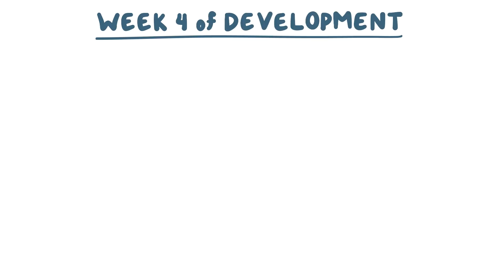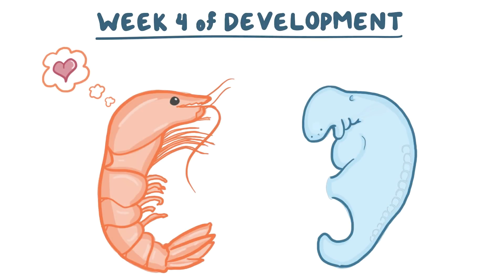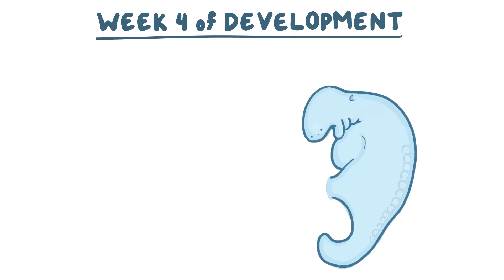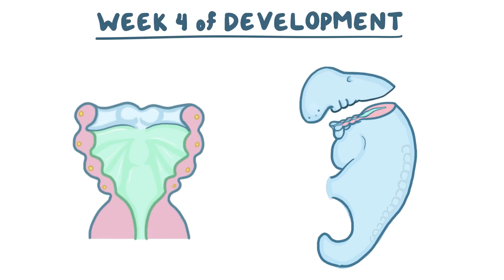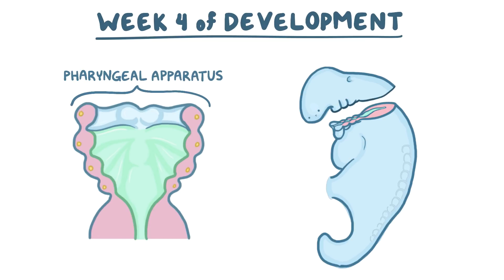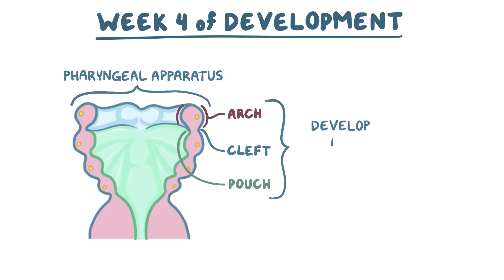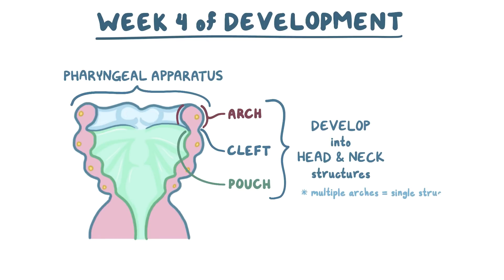By week 4 of development, the embryo takes on a more recognizably human form, but it still looks more like a shrimp than a baby. At the head end of this little shrimp-like creature, a set of structures called the pharyngeal apparatus starts to develop, consisting of pharyngeal arches, clefts, and pouches. The components of the pharyngeal apparatus develop into various head and neck structures, and sometimes multiple arches join together to give rise to a single structure.